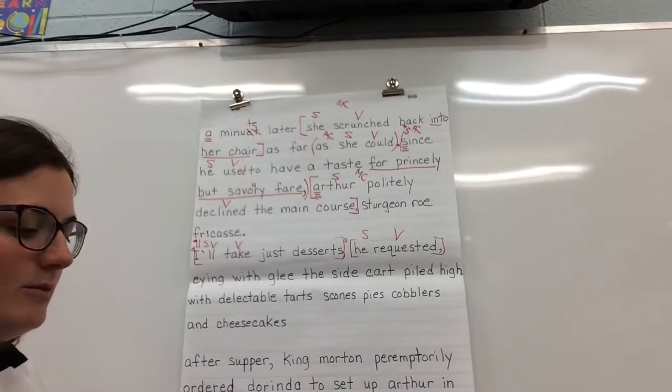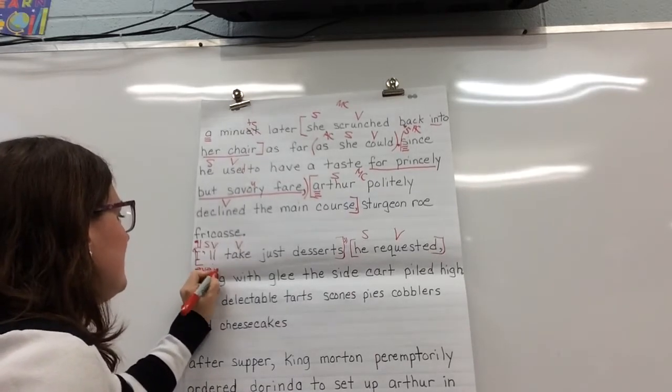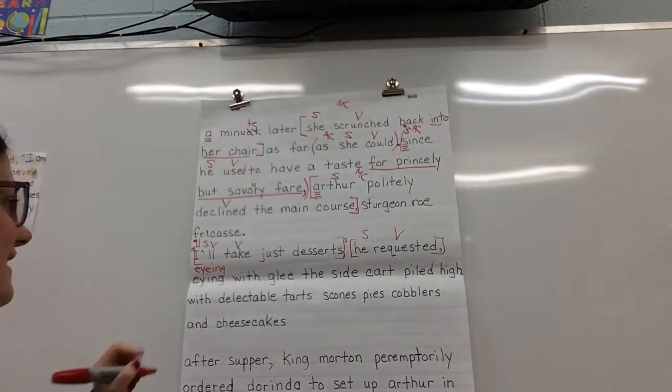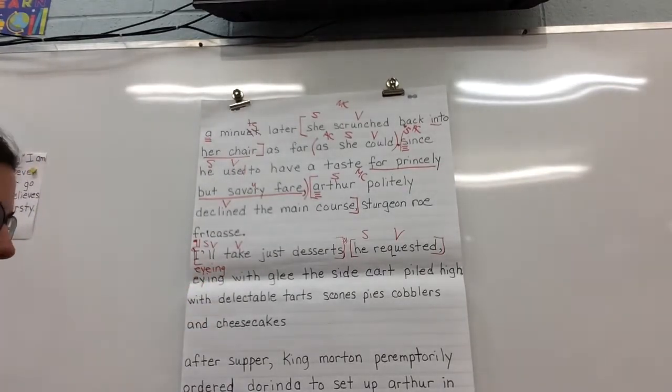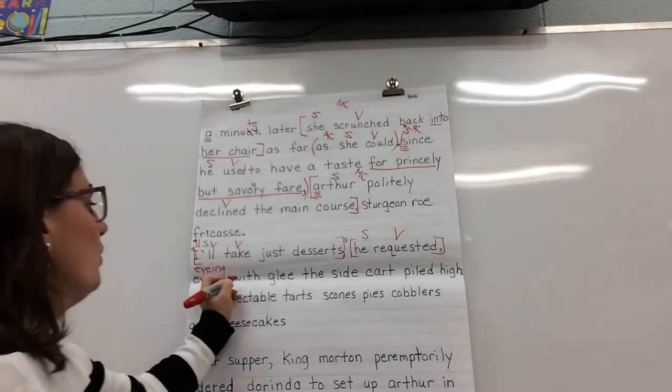And then we've got eyeing. You know, eyeing can actually be spelled both ways. E-Y-I-N-G or E-Y-E-I-N-G. Both of them are correct. Eyeing with glee, prepositional there.